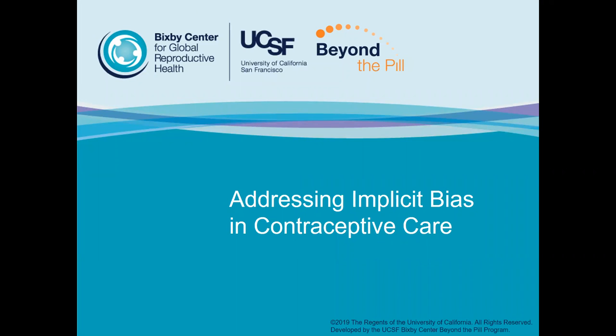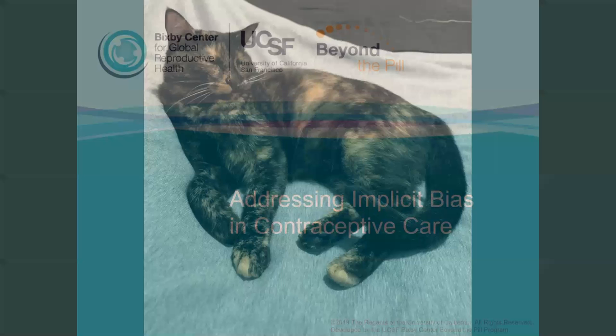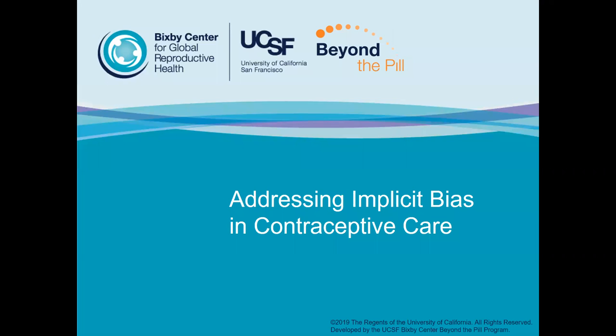We're going to dive right into implicit bias now. I'm sure many of you are familiar with implicit bias as a framework, but one thing I want to make sure we distinguish first is the difference between implicit bias and explicit bias. Explicit bias is prejudices that we consciously have.